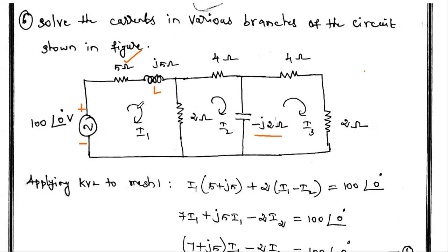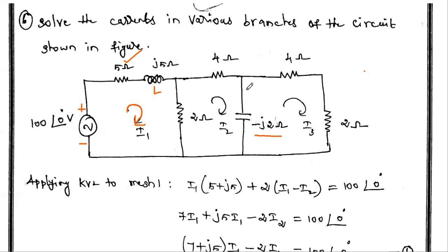Looking at the circuit, it consists of three meshes. This is the first mesh, and the current flowing in it is i1. This is the second mesh, with current i2. And this is the third mesh — a closed path — with current i3.